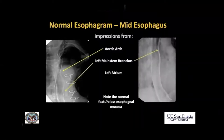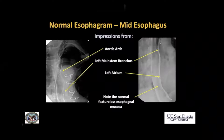There are three normal indentations on the esophagus. The first one is the aortic arch, seen here. The second is the left main bronchus, also better seen here where you can actually see the lucency of the left main bronchus crossing over and putting a little indentation on the esophagus. And the third normal indentation is the left atrium, which is going to be more marked in patients who have a large left atrium. So: aortic arch, left main stem bronchus, and left atrium — those are the normal impressions you will often see on the esophagus.